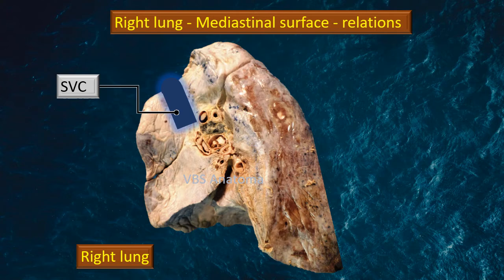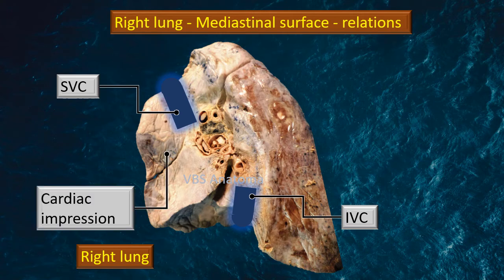Next, that blue thick area is the superior vena cava. The upper roughly half of that line is actually the left brachiocephalic vein. Similarly, the inferior vena cava also has its impression on the lung. Next, there is a massive cardiac impression related to the right atrium and a little bit of the right ventricle.